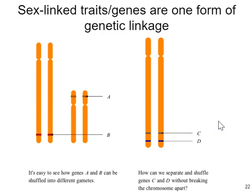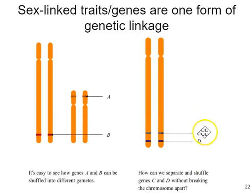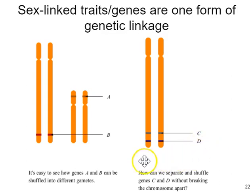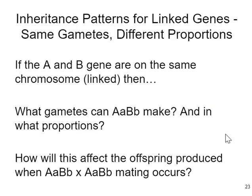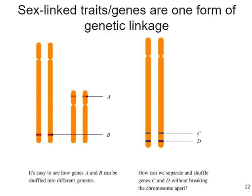Sex-linked traits or genes are one form of what is referred to as genetic linkage. Linkage means you're tracking the inheritance of two or more genes that are on the same chromosome, so they travel together through meiosis. Therefore, if you inherit a big C allele, you also inherit the big D allele. Sex is a condition associated with having the Y chromosome in humans, and any gene on the X chromosome is inherited in a pattern called sex-linked inheritance.